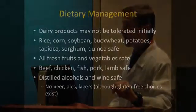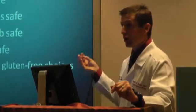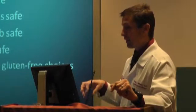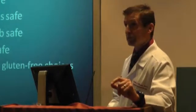You may want to avoid dairy products initially because the lactase enzyme is at the tip of those villi — and with villi shaved off, you'll be lactose intolerant until the villi grow back. Eventually you should be able to get back on dairy. Rice, corn, sorghum, potatoes, buckwheat, tapioca, and quinoa are all safe, naturally gluten-free items. All fresh fruits and vegetables are safe, as are meats — not including processed lunch meats — and fish. Distilled alcohol and wine are safe because gluten is a large molecule and won't carry over in distillation. However, beer, ales, and lagers are not safe, though there are some gluten-free choices available.